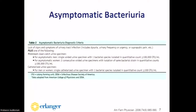There are set IDSA criteria that define true bacteriuria. This differs between a midstream clean-catch specimen and catheterized patients. For midstream clean catch, the threshold is 100,000 colony-forming units. For catheterized specimens, 100,000 CFU seems most accurate, though lower colony counts can represent true bacteriuria. Technically in women, two consecutive urine specimens are recommended to diagnose true bacteriuria, though in the hospital setting this is not clinically practical.